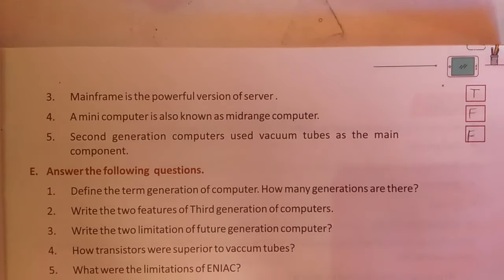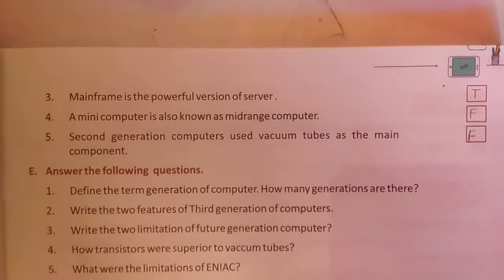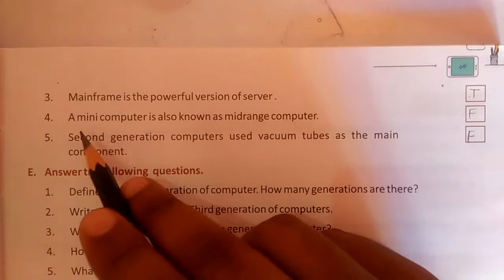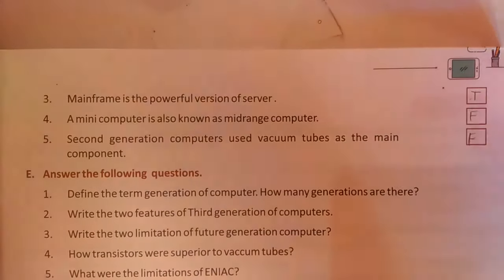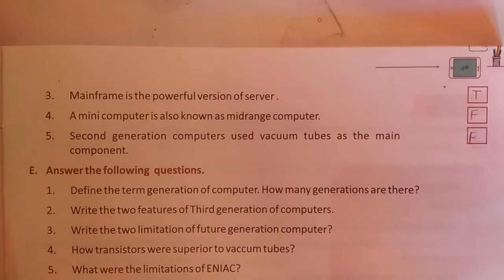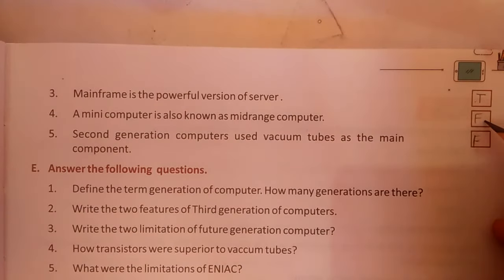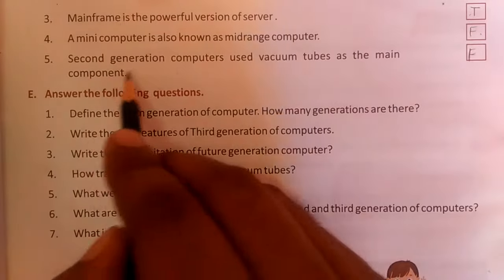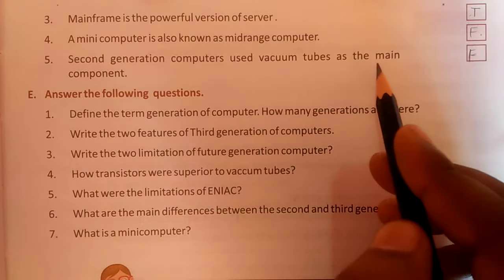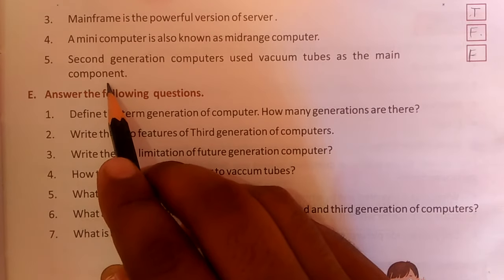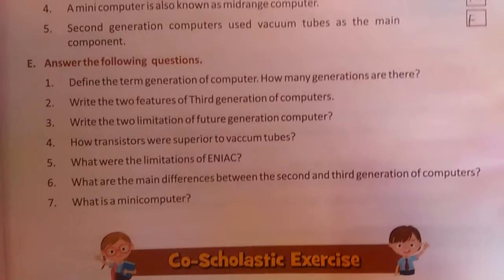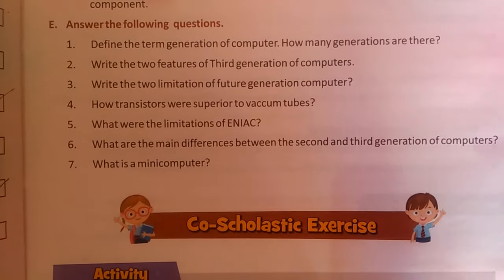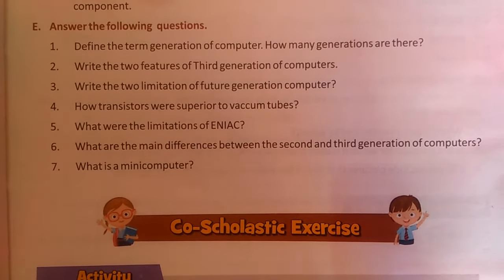A server is the powerful version of a desktop — this is true. A mini computer is also known as a midrange computer — this is true. A mini computer known as an abandoned computer — this is false. Second generation computers used vacuum tubes as the main component — this is false; second generation used transistors, vacuum tubes were first generation.